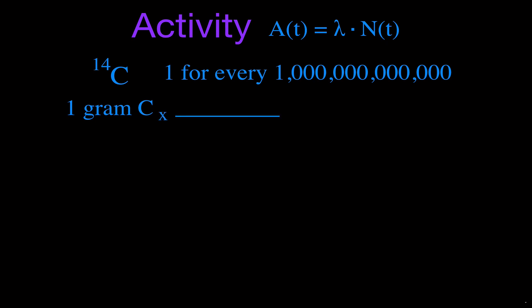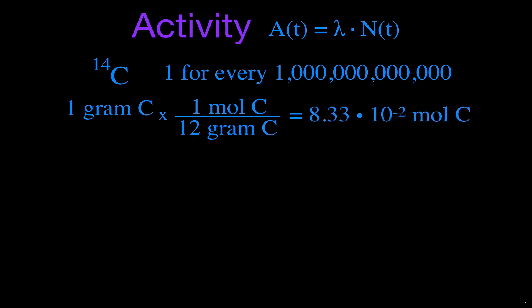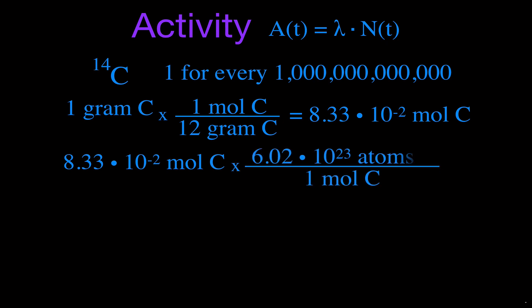We're going to use the molar mass: one mole of carbon equals 12 grams. So with one gram, we have one-twelfth of a mole — that's 0.0833, or 8.33 × 10⁻² moles. That's how many moles are in one gram. Now we want the number of atoms, so we convert using Avogadro's number: one mole of carbon equals 6.02 × 10²³ carbon atoms.